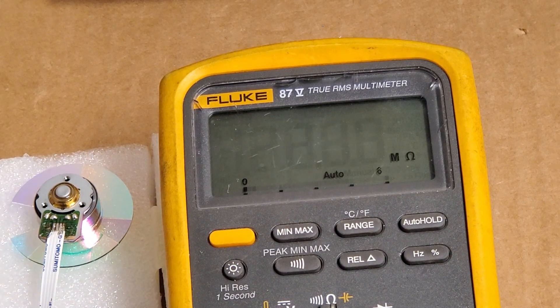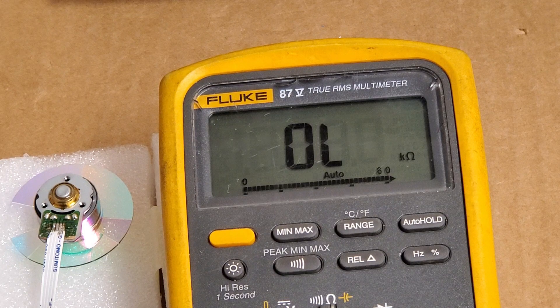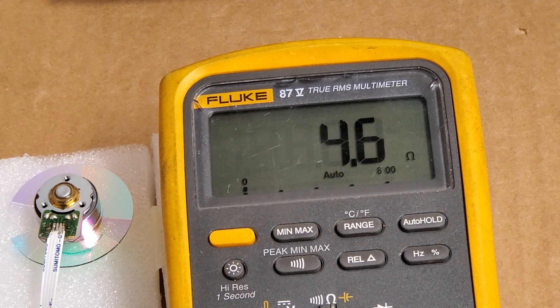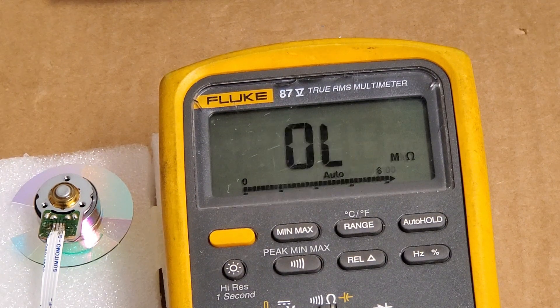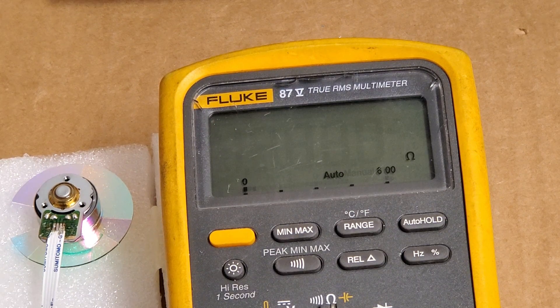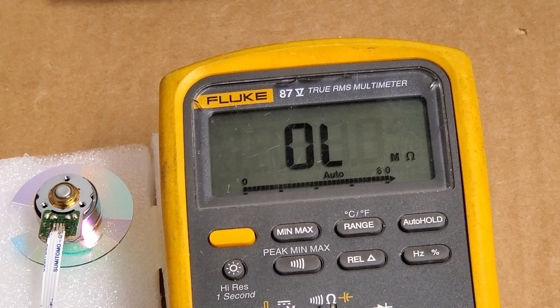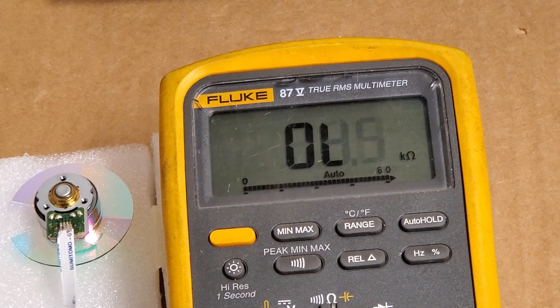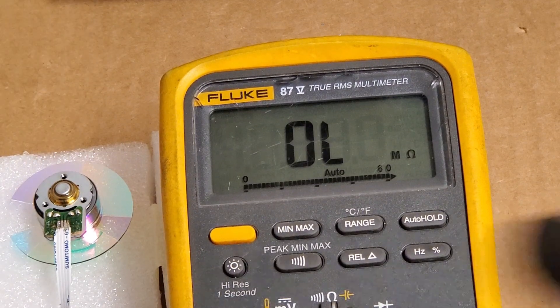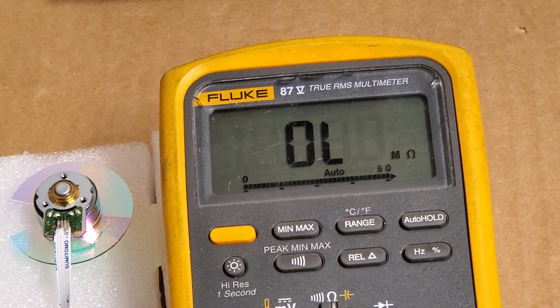So we should have 4.6 ohms. That's right. 4.5. And 4.5. So my solder job's good. There's no short circuit, that means.